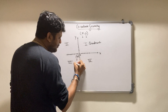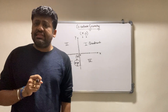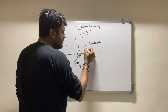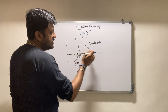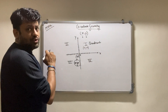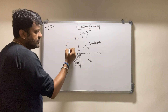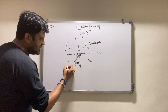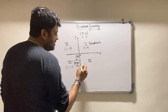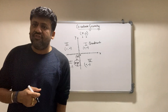Any point represented by x comma y has different sign combinations depending on the quadrant. In the first quadrant, x is positive and y is positive. In the second quadrant, x is negative and y is positive. In the third quadrant, x is negative and y is negative. In the fourth quadrant, x is positive and y is negative. This way you can easily identify which quadrant any point lies in.